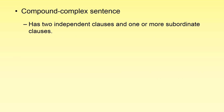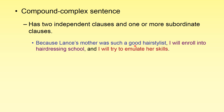The compound-complex sentence mixes the two other sentence types. It has two independent clauses and usually a dependent clause near the beginning. For example: 'Because Lance's mother was such a good hairstylist, I will enroll into hairdressing school and I will try to emulate her skills.' The subordinating conjunction creates the dependent clause, so the first comma is correct. Looking at what's left — 'I will enroll into hairdressing school' and 'I will try to emulate her skills' are both independent clauses joined by the coordinating conjunction 'and.' This is a correctly functioning compound-complex sentence.